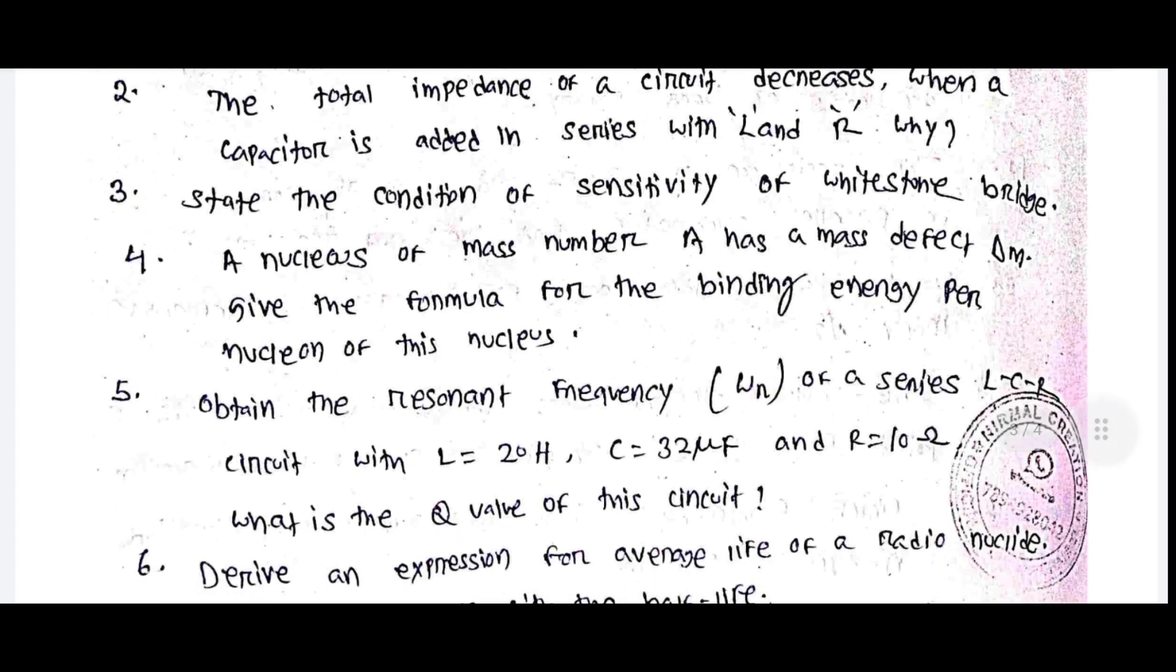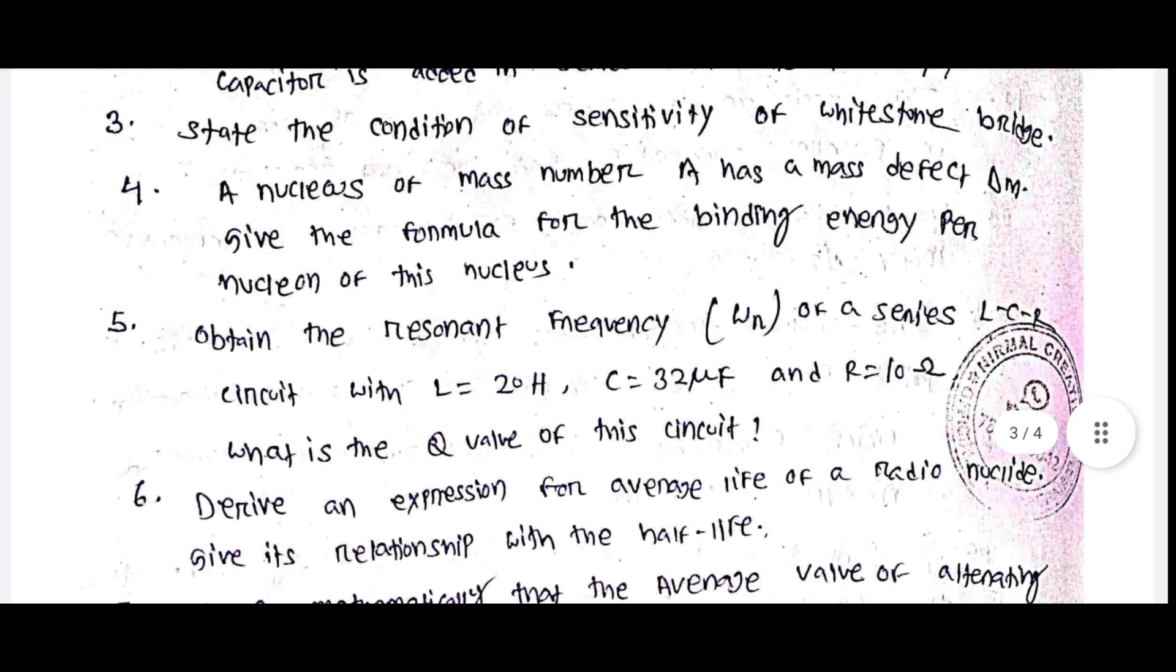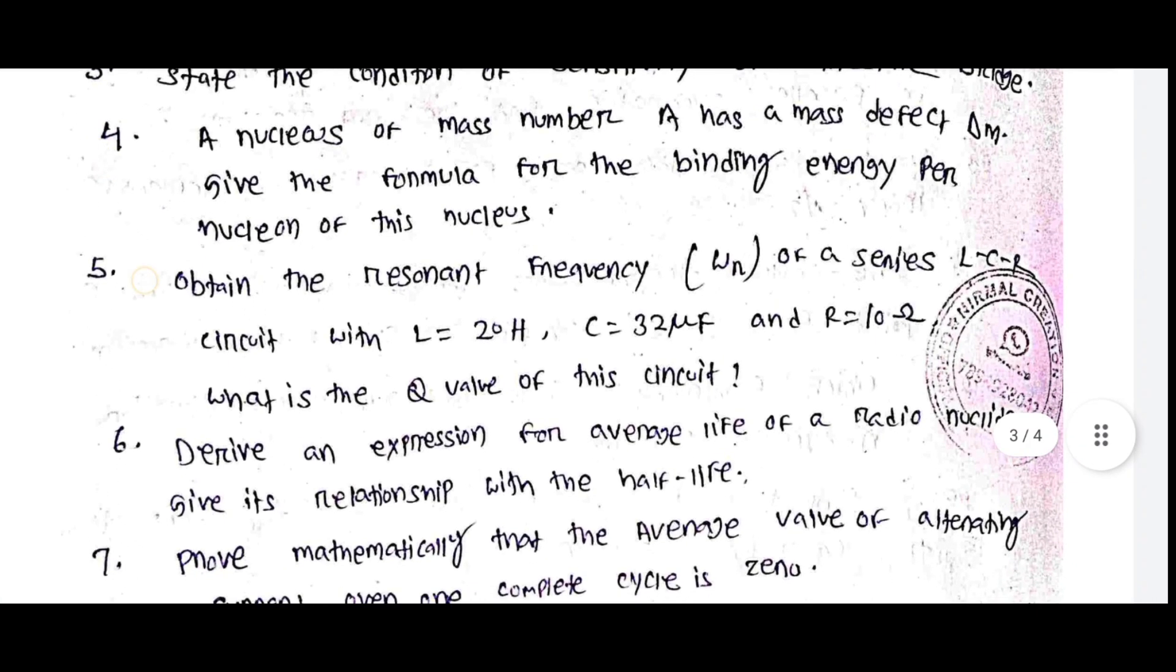State the condition of sensitivity of Wheatstone bridge. A nucleus of mass number A has a mass defect delta M - give the formula for the binding energy for nucleus of this nucleus.